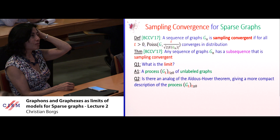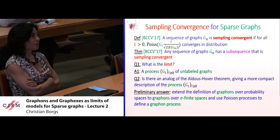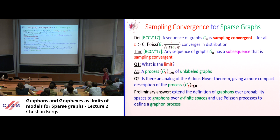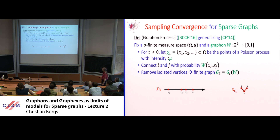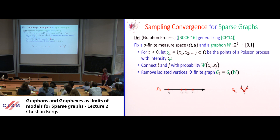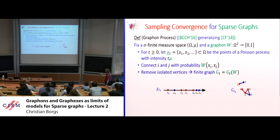Is there an analog of the Aldous-Hoover theorem for these kinds of processes? A preliminary answer: you have some function W on a feature space into [0,1], choose a Poisson process, connect vertices i and j with probability W(xi, xj), remove isolated vertices, and get this object — the process of random finite graphs described by a graphon over a sigma-finite space, as Jennifer already discussed.